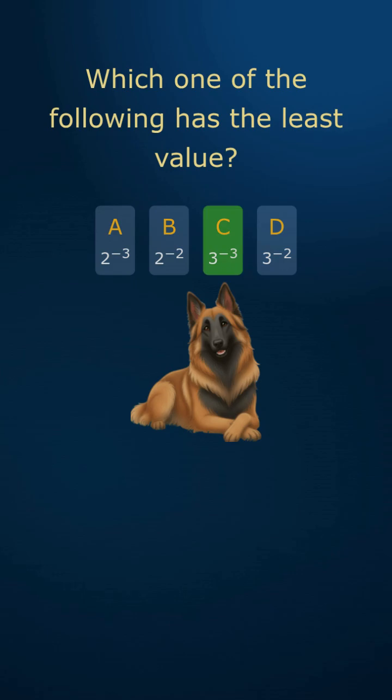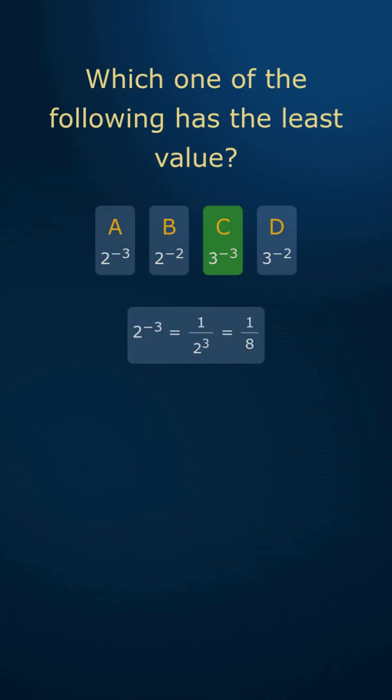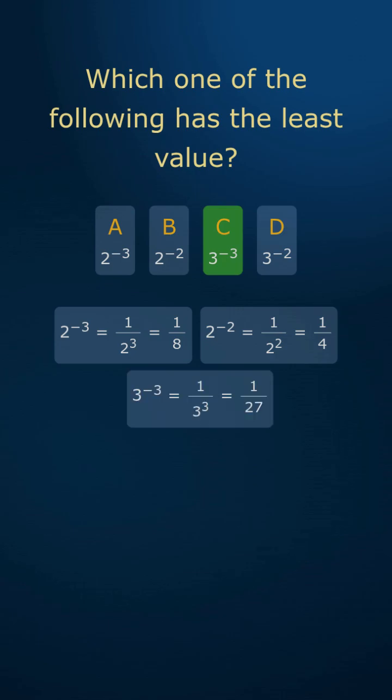Answer is C. 2 to the power minus 3 equals 1 eighth. 2 to the power minus 2 equals 1 quarter. 3 to the power minus 3 equals 1 27th. 3 to the power minus 2 equals 1 ninth.